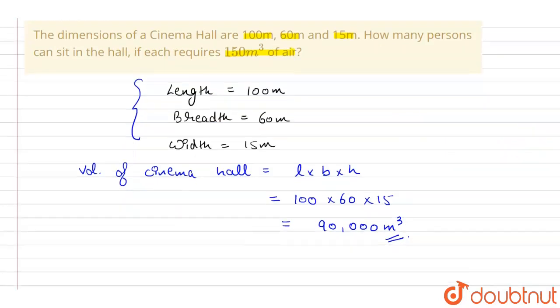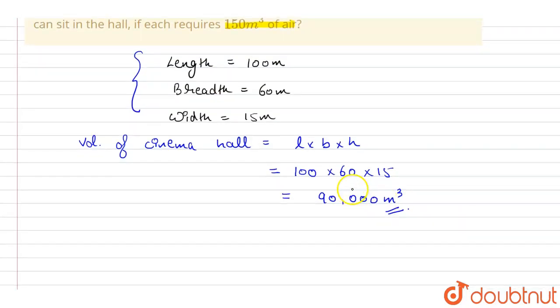Now we need to find out the number of persons who can occupy in this cinema hall. It is given that each person requires 150 meter cube of air.